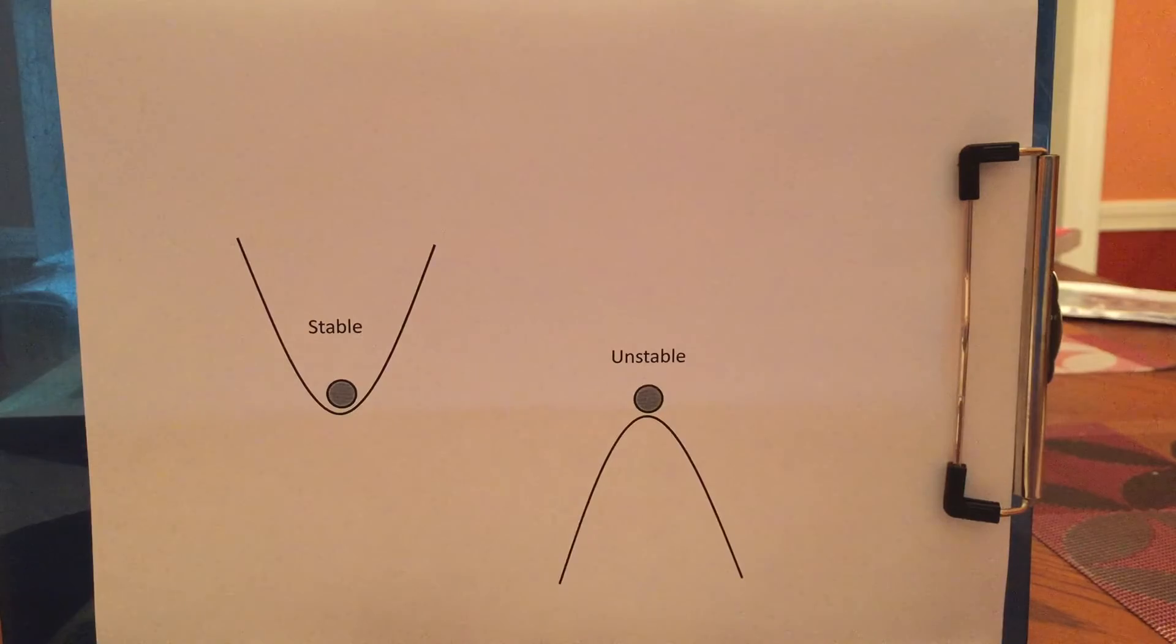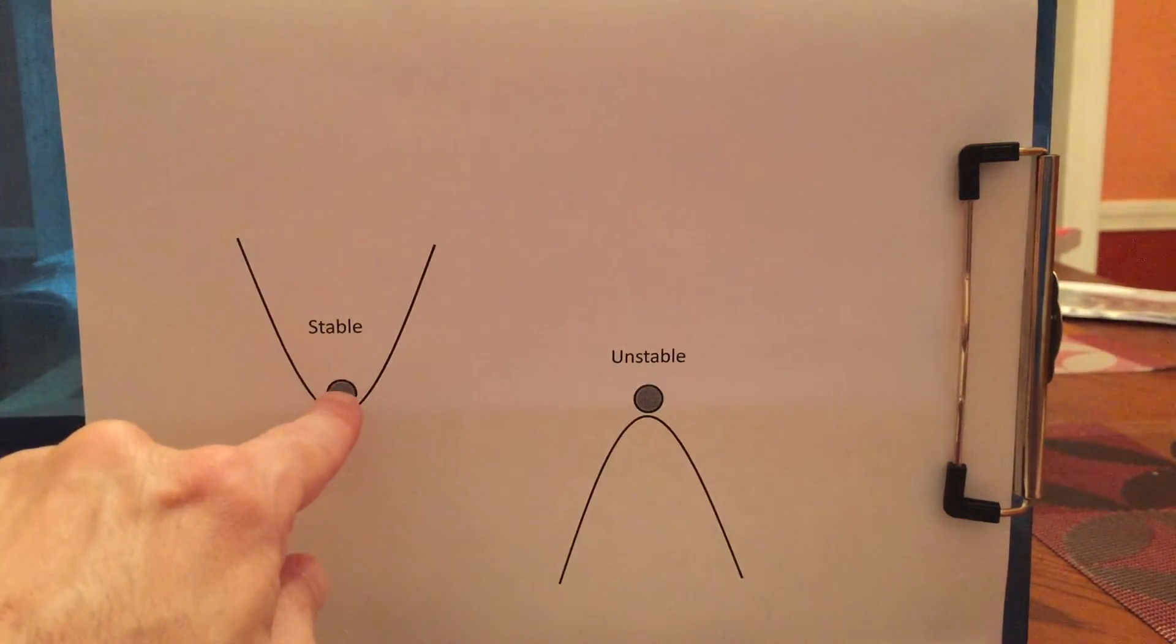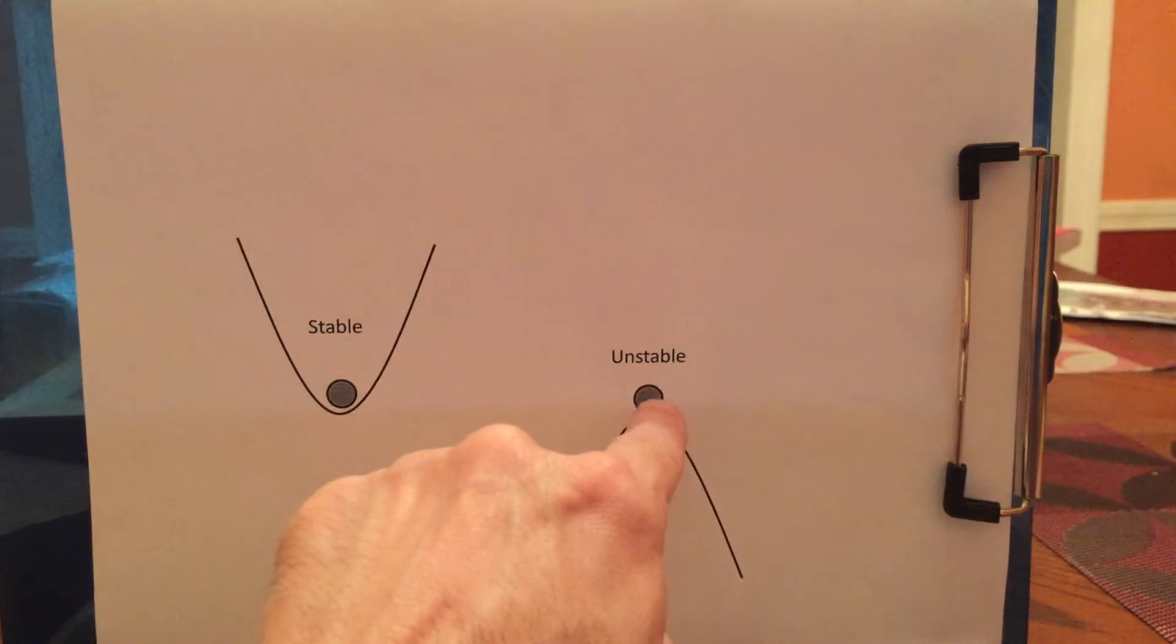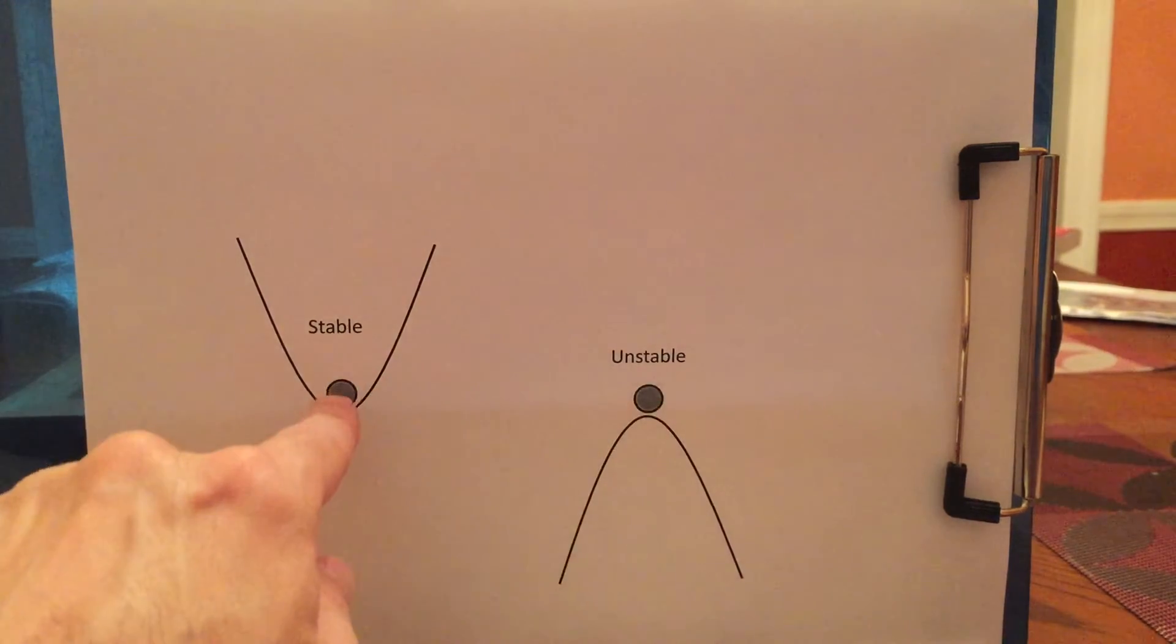To tell you what I mean by stability, consider these two simple diagrams. This is a rock at the bottom of a valley, and this is a rock at the top of a mountain. Now this is stable to external winds. You've got a rock at the bottom of a valley and there's winds that push it up. Well, it'll come back down again.